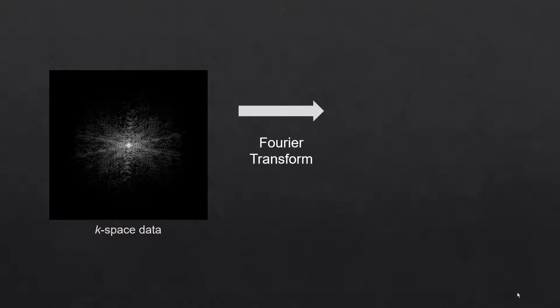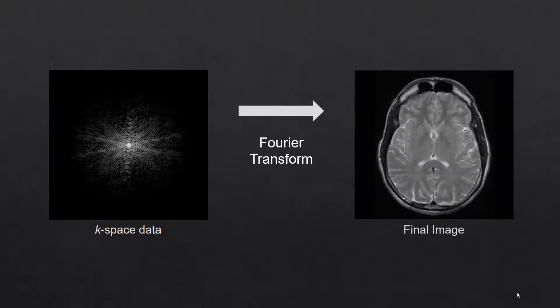We're going to start with k-space. K-space is basically a grid of raw data — a visual representation of the echo signal. The k-space data is converted into the MR image using a complex mathematical method called a Fourier transform. Now k-space can be difficult to understand, but there are only two important principles that you need to remember.